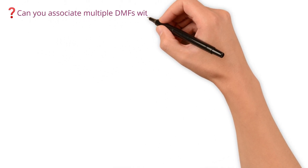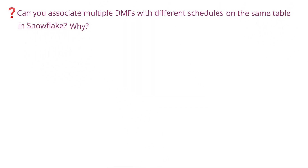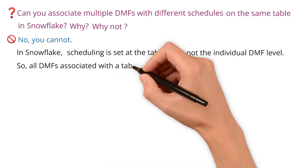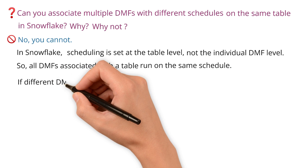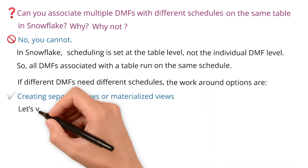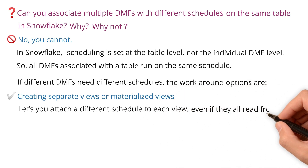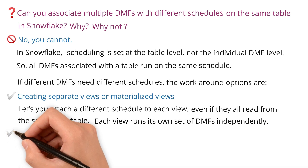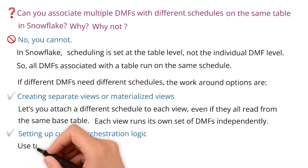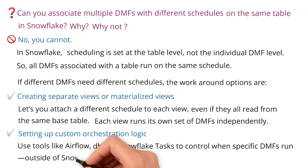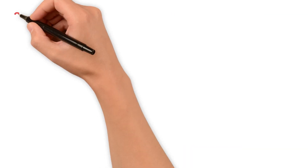Can you associate multiple DMFs with different schedules on the same table in Snowflake? No, you cannot. Scheduling is set at the table level, not the individual DMF level, so all DMFs on a table run on the same schedule. Workaround options include creating separate views or materialized views — letting you attach different schedules to each view even if they all read from the same base table — or setting up custom orchestration logic using tools like Airflow, DBT, or Snowflake tasks.